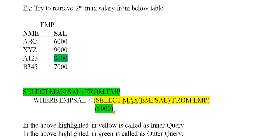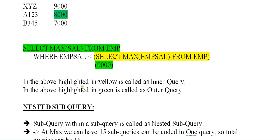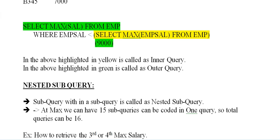So the output would be 8000. In the above, the part highlighted in yellow is called the inner query and the part highlighted in green is called the outer query.